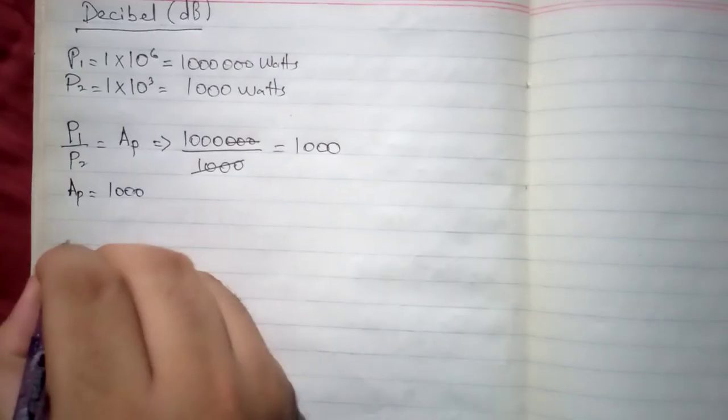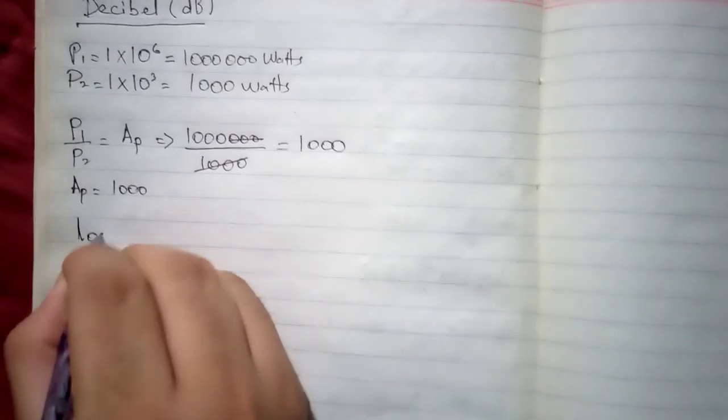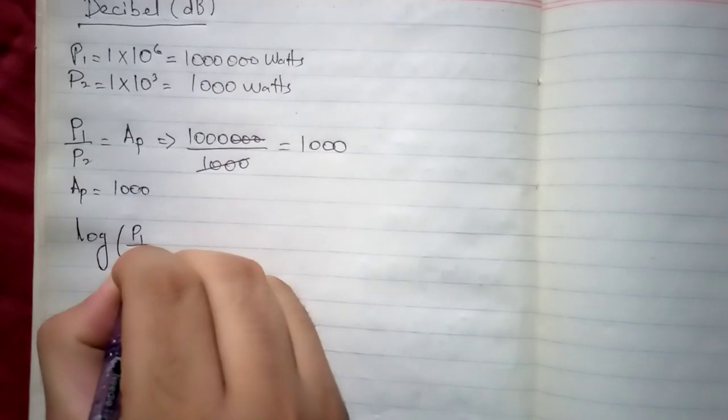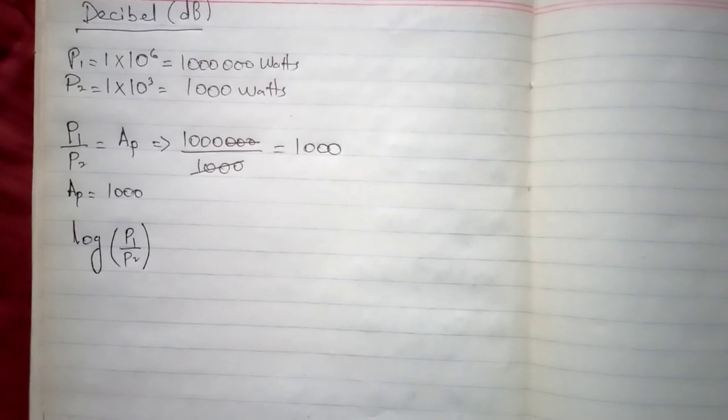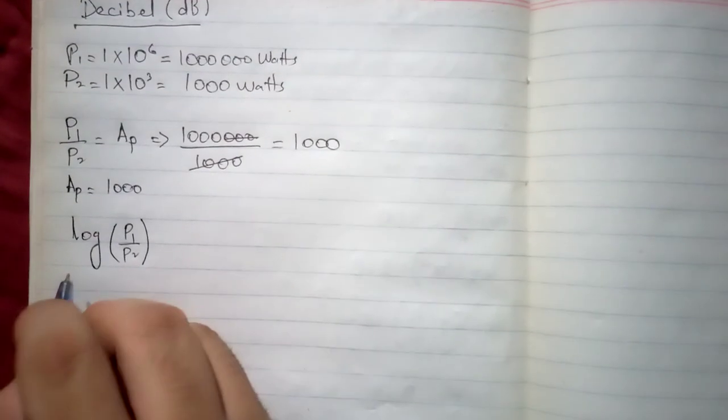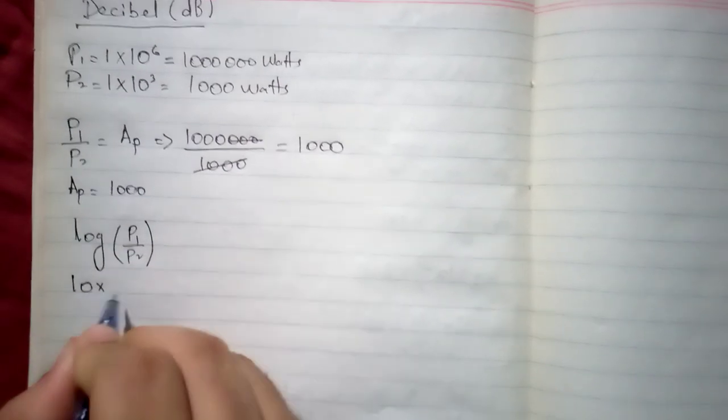This is the concept which the scientist Bell actually gave us. He told us how you can convert a large value gain into a small value, which is called decibel. First of all, you will take log of the ratio. The ratio P1 divided by P2, you will take log of this ratio. Then you will multiply 10 with this log.